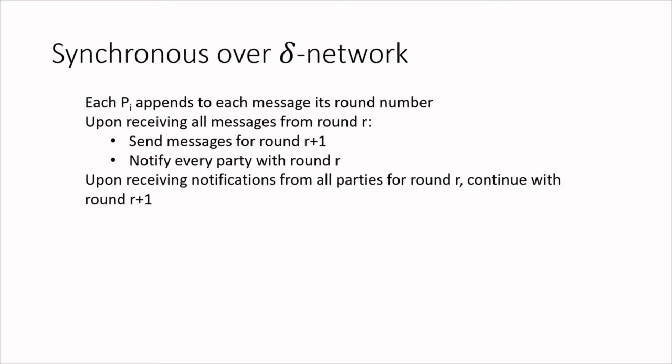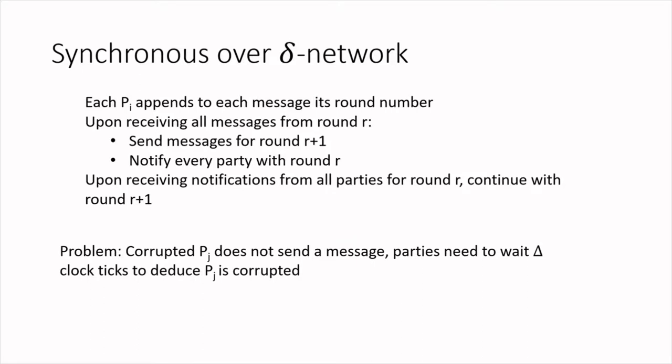One can see that the protocol achieves security in the sense that when parties output, they output the correct value, and privacy is preserved. Moreover, if all parties are honest, the protocol is responsive — it outputs as fast as the network allows. However, because PI doesn't know who is corrupted and who is honest, it has to wait for all parties. This implies that a single corrupted party can make the protocol not terminate simply by not sending its messages, and as a consequence, one cannot hope to obtain any level of responsiveness.